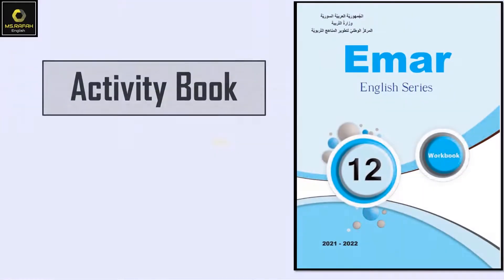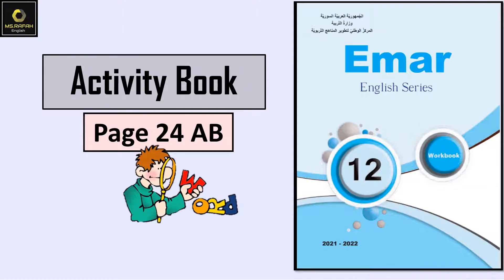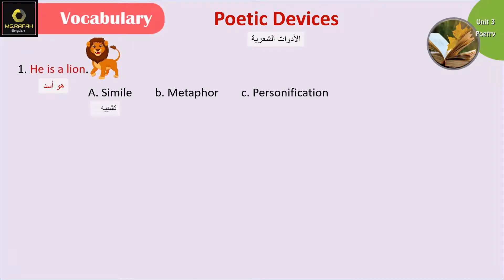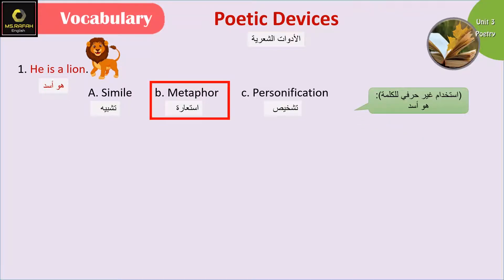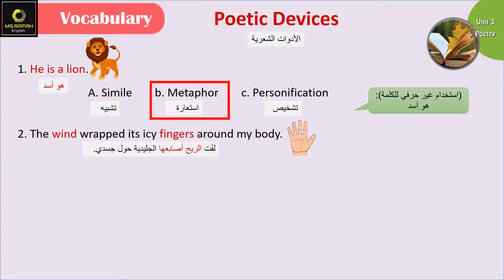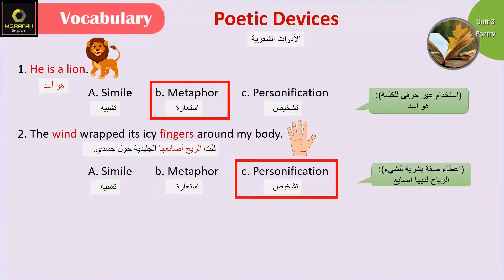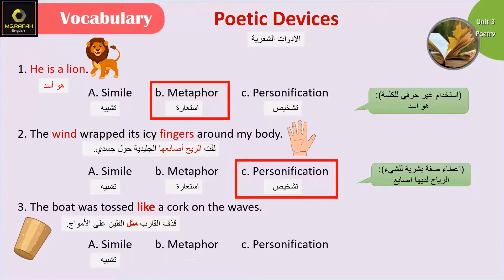Now let's move on to the activity book page 24 — metaphor: poetic devices. 'He is a lion.' عنا استخدام غير حرفي للكلمة — metaphor. 'The wind wrapped its icy fingers around my body.' عطينا صفة بشرية للشيء — الرياح عند أصابع مثل الإنسان — so we have personification. 'The boat was tossed like a cork on the waves.' هون استخدمنا المقارنة لوصف شيء واستخدمنا كلمة like — إذن it is a simile.